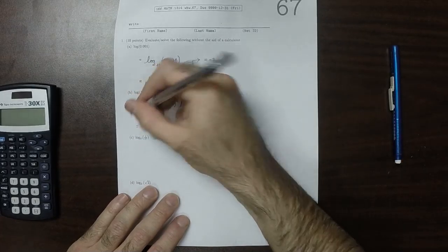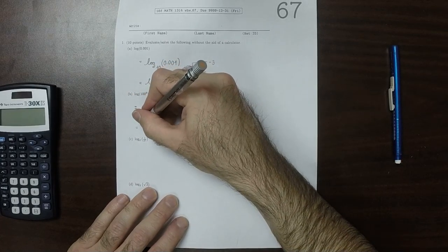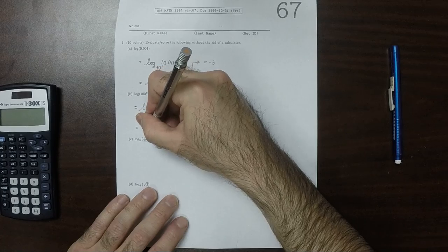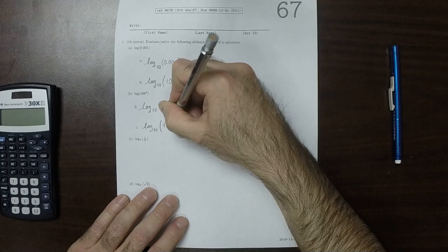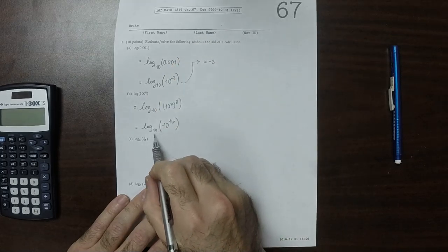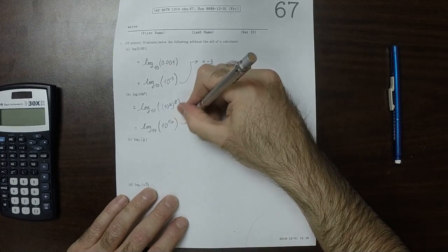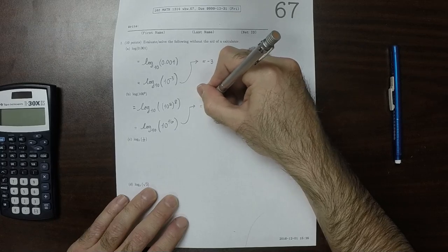Well, those iterated exponents can be combined with multiplication. So that's log base 10 of 10 to the 16. But that is, again, just like the previous one. So the answer is 16.